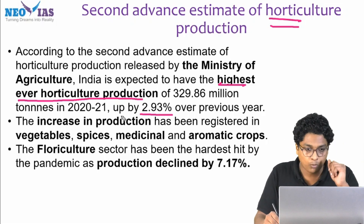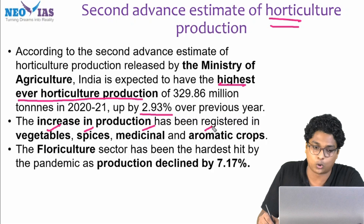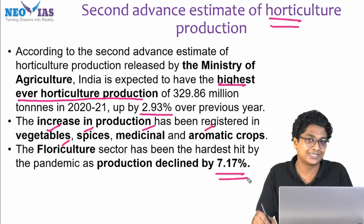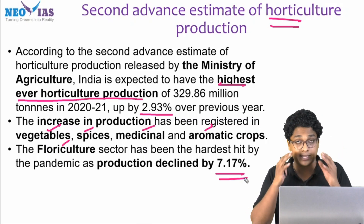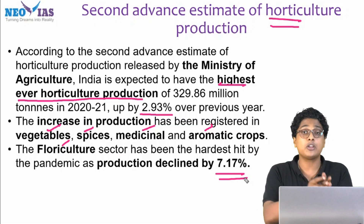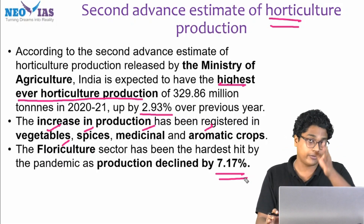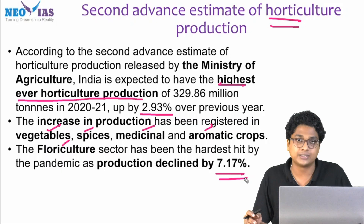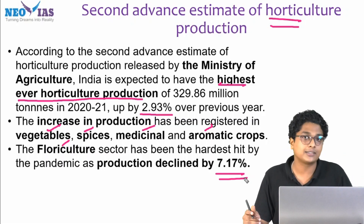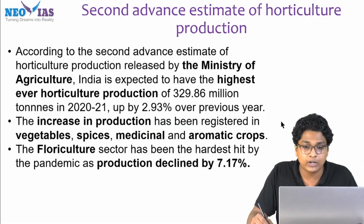There is a catch here: mostly the increase in production is related with vegetables, spices, and medicinal and aromatic crops. When it comes to floriculture — regarding flowers — production declined by 7.17%. In recent years, UPSC has asked questions like which crop has a larger cultivation area. This area-under-cultivation data given by the government and in the economic survey in recent years is very important, as we do get agriculture-based questions from it. This data was given in PIB.